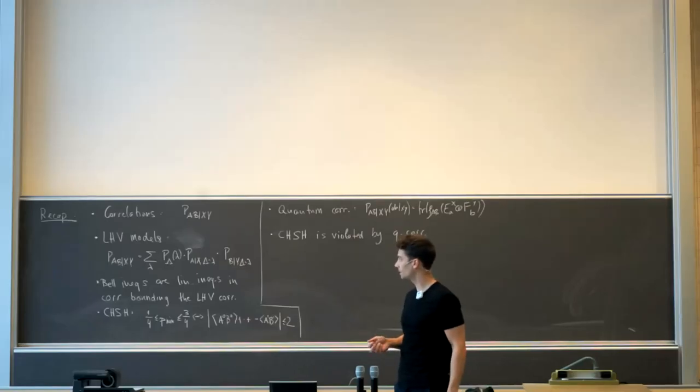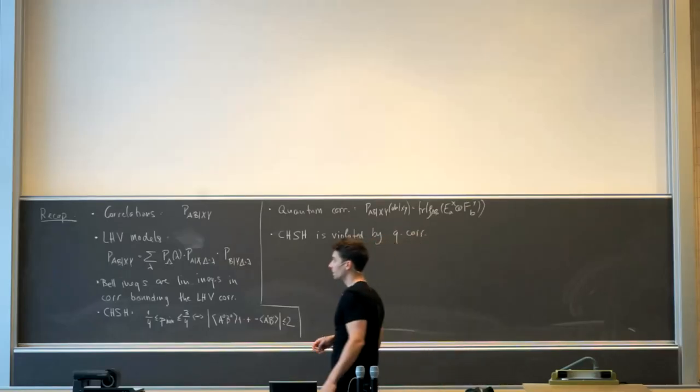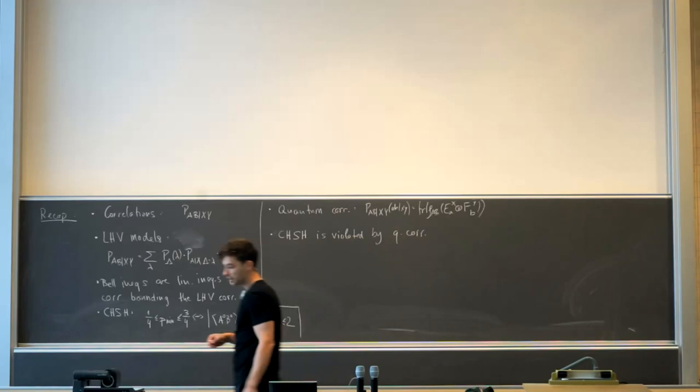I'd like to do a little recap of what we've done yesterday. We started by introducing the main object of our interest, which was the conditional probability distribution — in our case, with two input variables and two output variables: P(ab|xy).